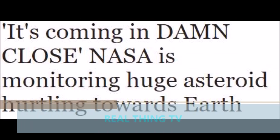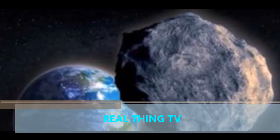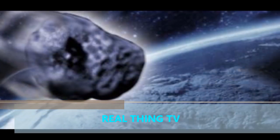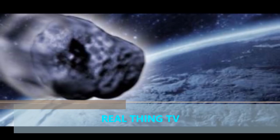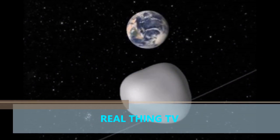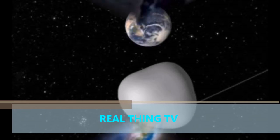It's coming in damn close. NASA is monitoring a huge asteroid hurtling towards Earth. NASA has confirmed it is monitoring the approach of a large celestial object that a top scientist warned is coming in damn close. An asteroid called 2012 TC4 is due to make a staggeringly close pass of Earth on October 12.